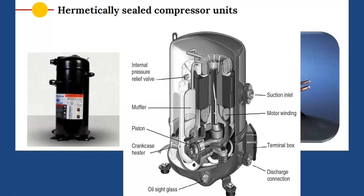Hermetically sealed compressors are generally recommended for small and medium-scale systems, not for higher capacities. If capacity exceeds 20 to 25 TR, these compressors are not recommended, because as motor capacity increases, heat generation increases, causing refrigerant superheating problems. These compressors are not as efficient as open-type compressors because refrigerant absorbs motor heat before compression, causing excessive superheating, which is undesirable as it increases work input.